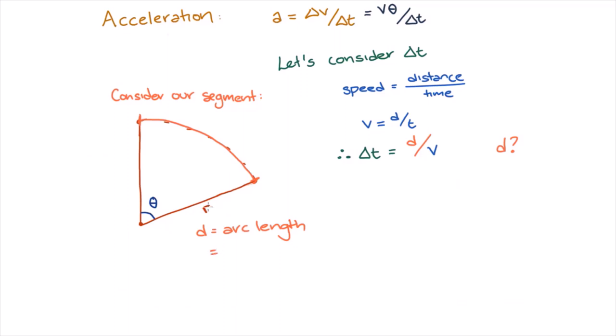Therefore, we can find that the distance the object has traveled is r times theta. We also know that the speed the object is traveling at is equal to v. We can now plug this back into our change in time to give us delta t equals r theta over v.